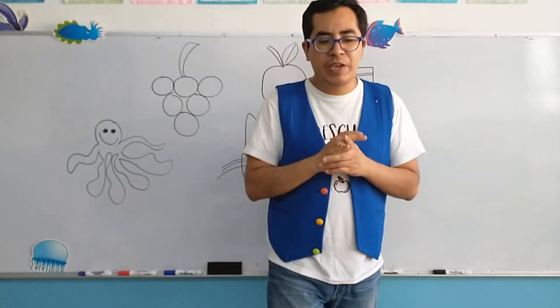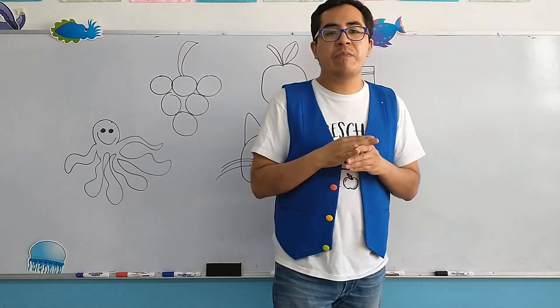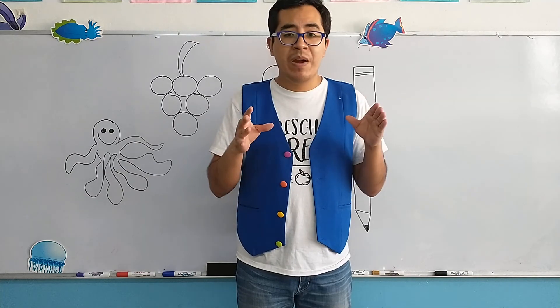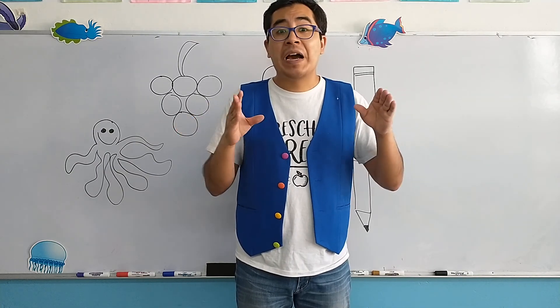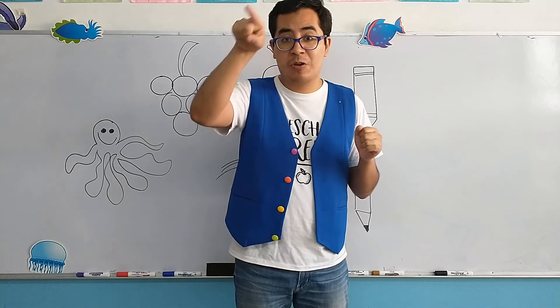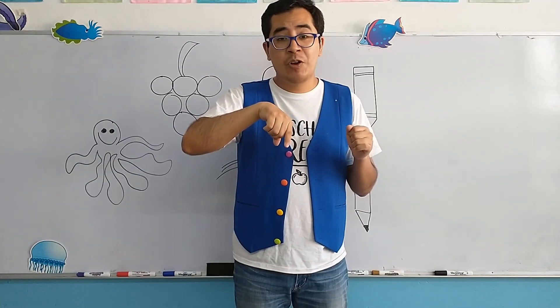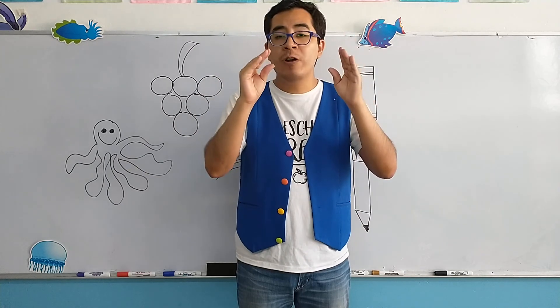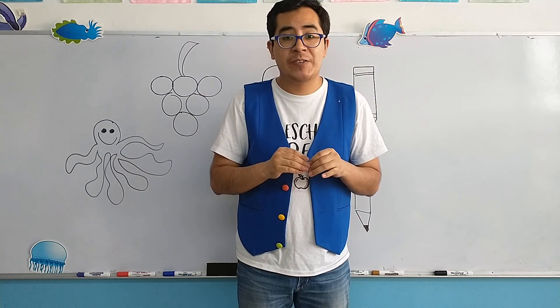So let's begin first of all with the review of the capital O, small o. Remember that this letter has the shape and form of a circle. There is no difference between mayuscula, minuscula, the only difference is the size.